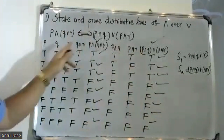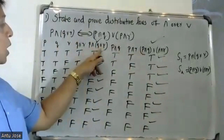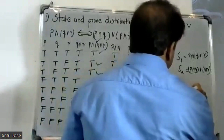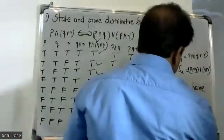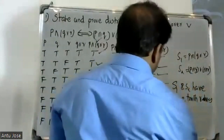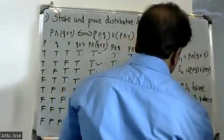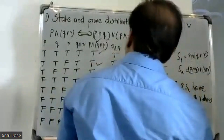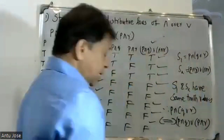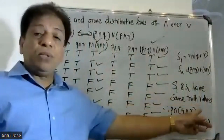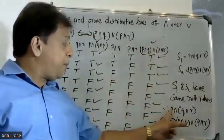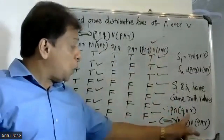S1 and S2 have the same truth values throughout the truth table. Therefore we can say that P and (Q or R) is logically equivalent to (P and Q) or (P and R).